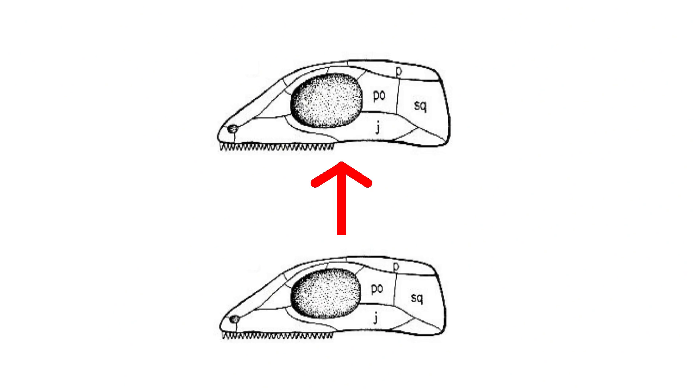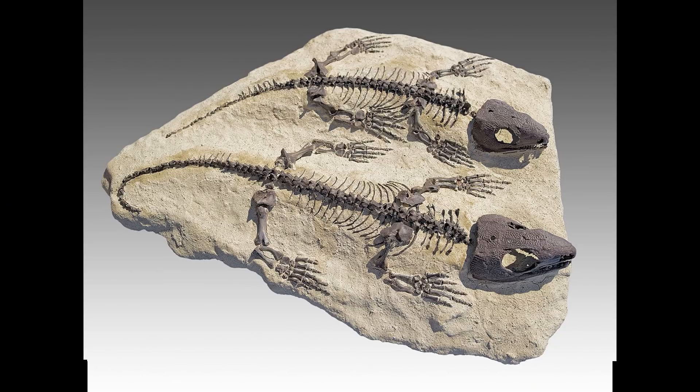The origin of turtles has been a contentious issue, and paleontologists have proposed three ideas for turtle origins. The first idea is that turtles originated from a very early primitive reptile that exhibited no holes in the skull beyond the orbit or eye socket. This hypothesis contends that turtles are the sole survivors of this early group of reptiles, called the anapsids, meaning no holes.